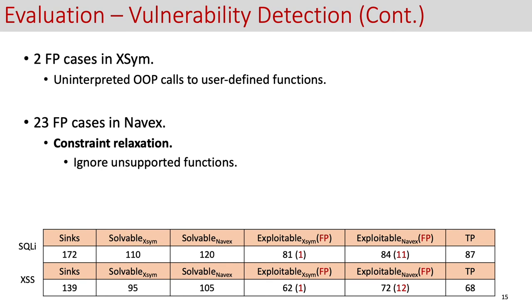There are 23 false positive cases in Navex. We conclude that part of things are caused by the constraint relaxation because of the limited supported function. Navex chooses to ignore other unsupported functions. In this way, many actually unsatisfiable constraints are then reported as satisfiable. The other ones are caused by functionality simplification, where the unsupported functions are not modeled completely. Only partial functionalities are supported. These two reasons in Navex are understandable because of the nature of manual modeling with limited human resources.